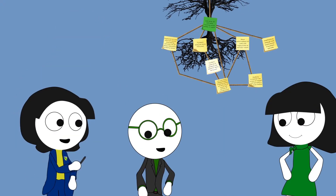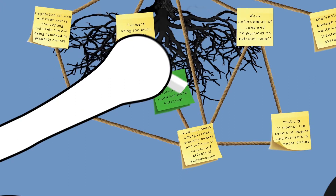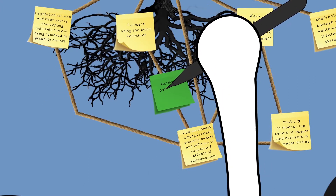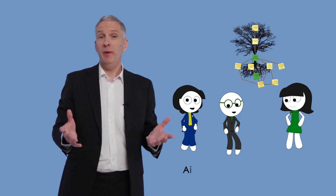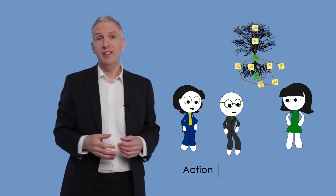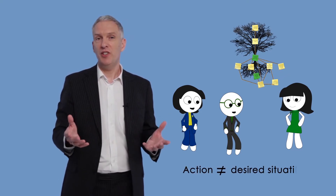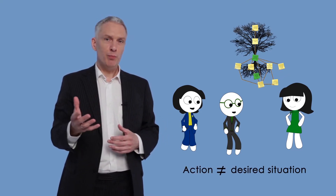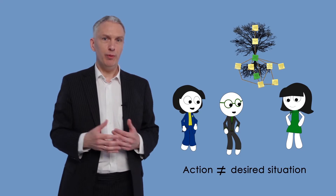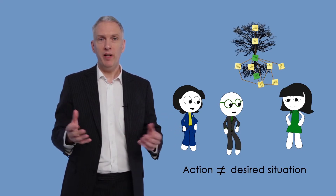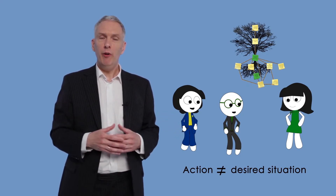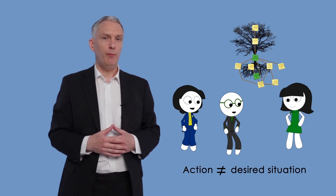Let's take the next one: farmers performing nutrient studies. Not quite — you have formulated an action, not a desired situation. Whenever you spot a verb in a goal, like 'performing', you know it is probably not a proper goal.